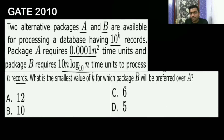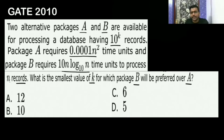They are asking: what is the smallest value of k for which package B will be preferred over A? That means package B will take less time. I will assume that N, the number of records, is equal to 10 to the power k.